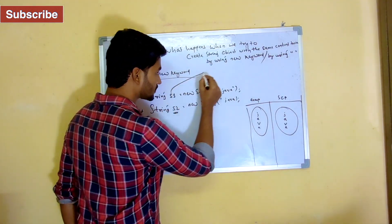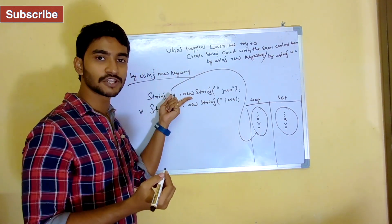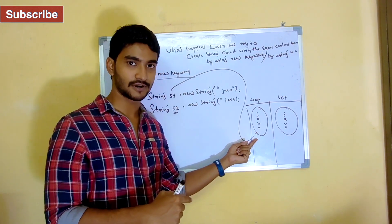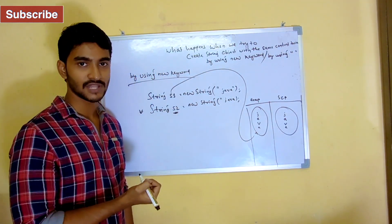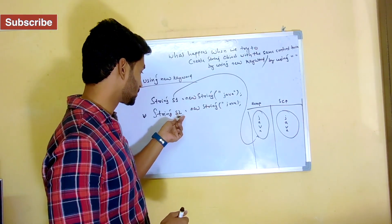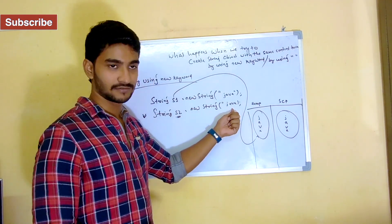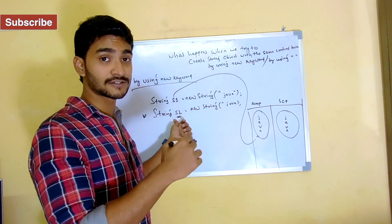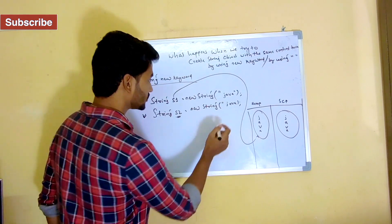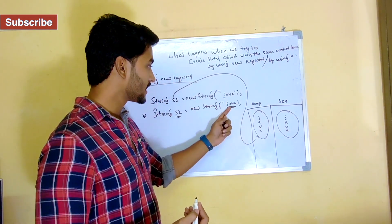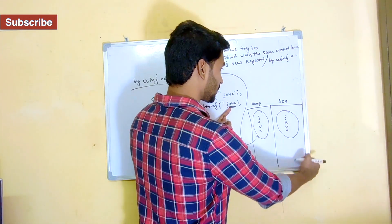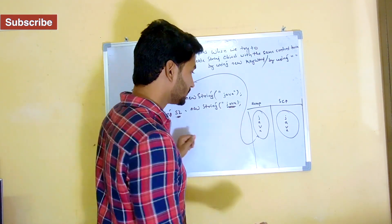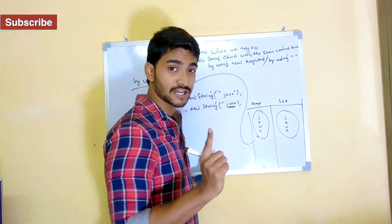Now S1 is pointing to the heap object, because if you are using the new keyword, the string reference is always going to point to the heap memory. Now let's say I'm creating another object S2, which also holds 'Java' as its value. What happens behind the scenes? JVM encounters 'Java' as a constant again, so it needs to check the string constant pool before creating another object there.